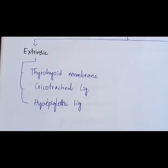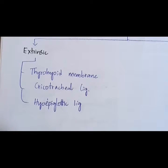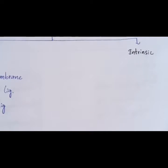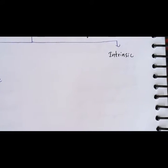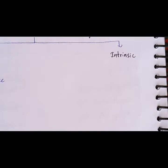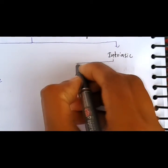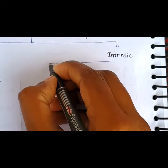We are finished with the extrinsic ligaments and membranes. Now let's move on to the intrinsic ligaments and membranes of the larynx. There are totally six intrinsic ligaments and membranes.